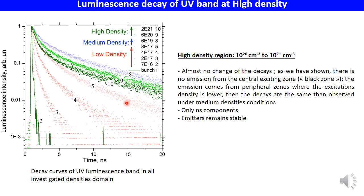In the high density region from 10^20 to 10^21 per cm³, there is almost no change of the decays with respect to the medium density domain, as presented by the green curves 9 and 10. This is supported by the dark zone in the central part of the excited region, where emission comes only from peripheral zones where the density is lower, like in the medium range. There are only nanosecond components and the emitters remain stable.